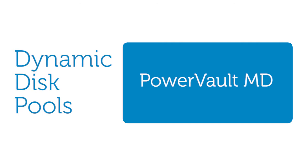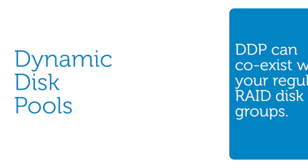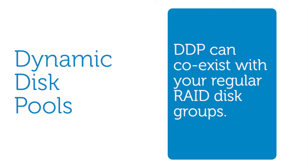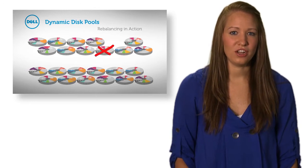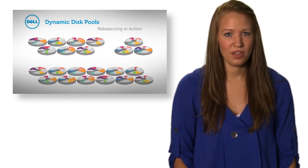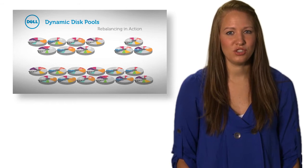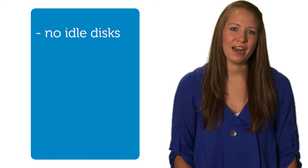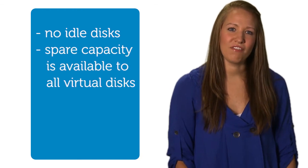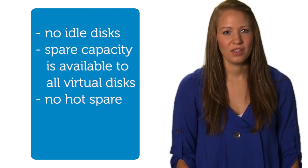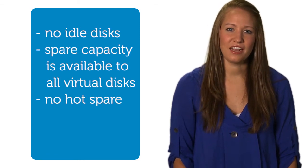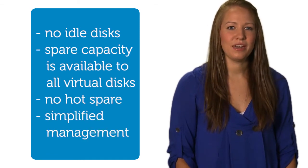A disk pool is a new type of disk group that can coexist with traditional RAID disk groups. The current minimum requirement for number of disks residing in a pool is 11 physical disks. In disk pools, virtual disk data is distributed across all virtual disks that reside in the disk pool in a balanced, repeatable, and pseudo-random pattern. Therefore, no physical disks in a disk pool remain idle, and spare capacity is available to all virtual disks in the disk pool. This eliminates the need for assigning a hot spare and simplifies management operations.